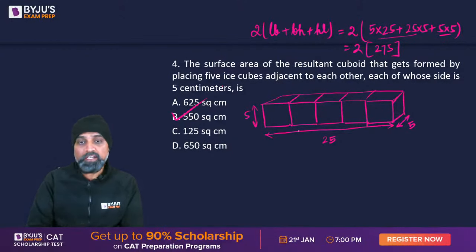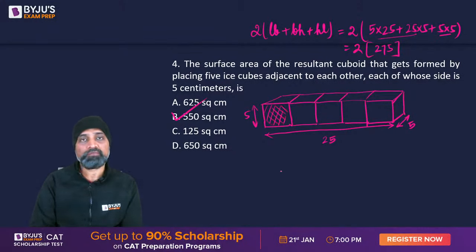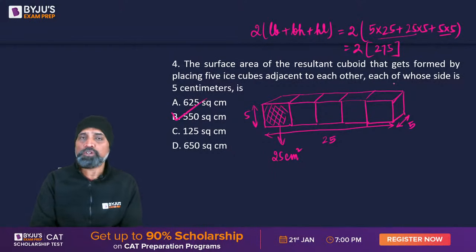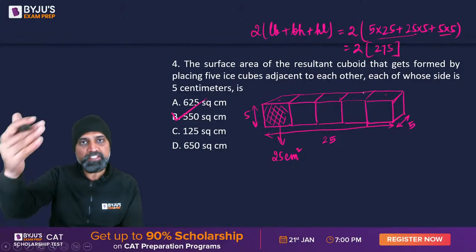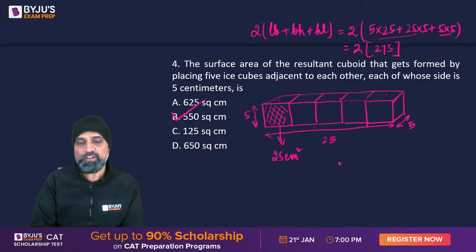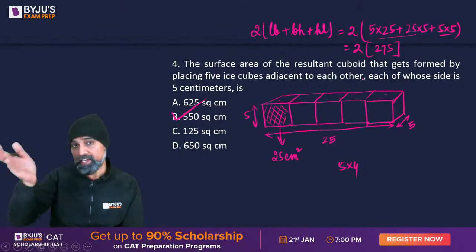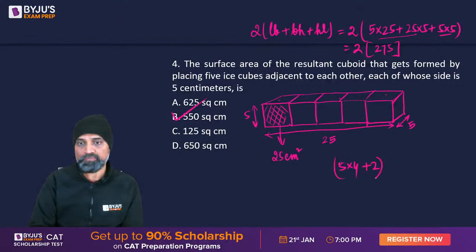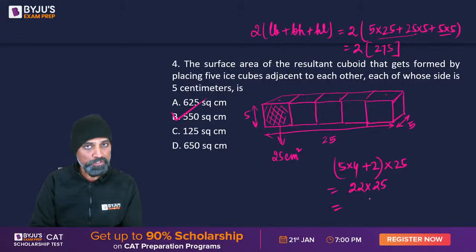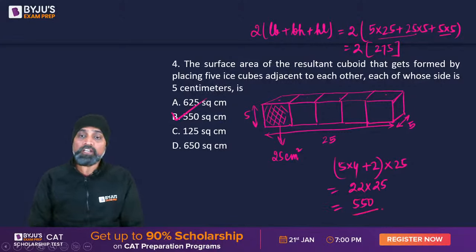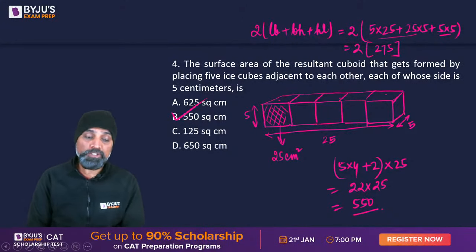An alternative approach: each face is 25 square centimeters. Count how many faces there are: 5 on front, 5 on top, 5 at rear, 5 at bottom — that's 20 faces — plus one on each side, giving 22 faces total. So 22 times 25 equals 550 square centimeters. Same answer.